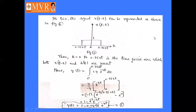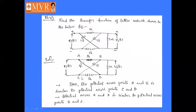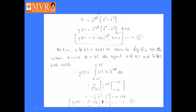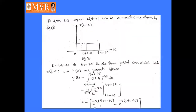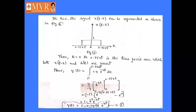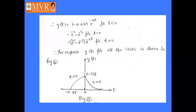So y(t) = 1 − 0.0498·e^(−4t) for t < 0, and y(t) = 0.318·e^(−4t) for t > 0. For t = 0, x(t−k) = x(−k) as shown in figure 5; this case will be analyzed in the next class. This concludes today's session; the remaining part of this problem will be explained in the next class.